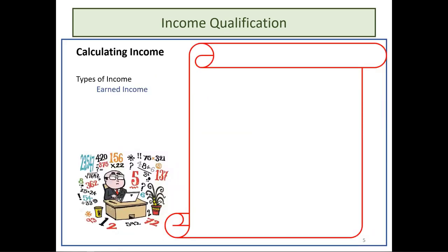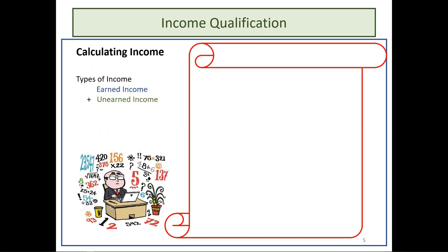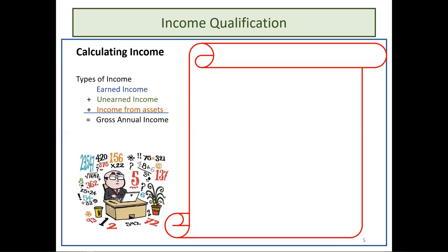When calculating income, there are three types we look at. There's earned income, such as working at a job or self-employment. There's also unearned income, such as social security, unemployment, or income given to the household from outside sources. And then there's income from assets, such as a bank account or stocks paying dividends or interest. We need to add up all these types and calculate the gross annual income for the household. The tax credit program only deals with gross income, not net income as in programs like HUD or USDA.